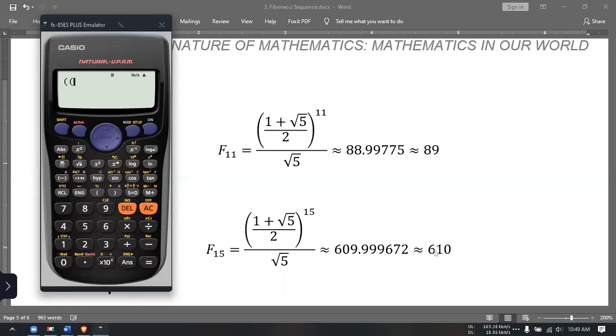We need to open parenthesis 1 plus square root of 5, and then rightwards arrow, close, divided by 2, and then close, and then raise to whatever the end term of the Fibonacci. We have 15.